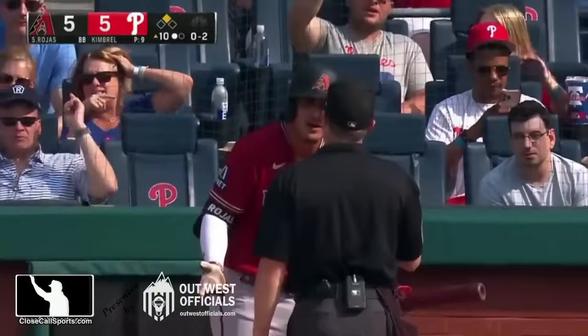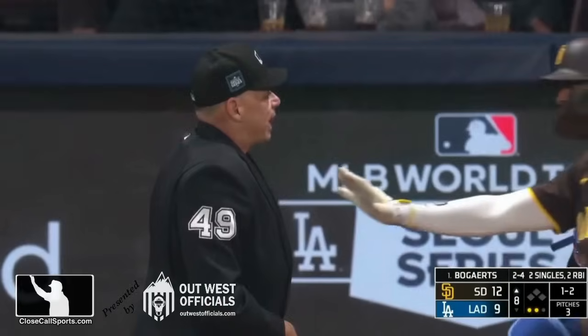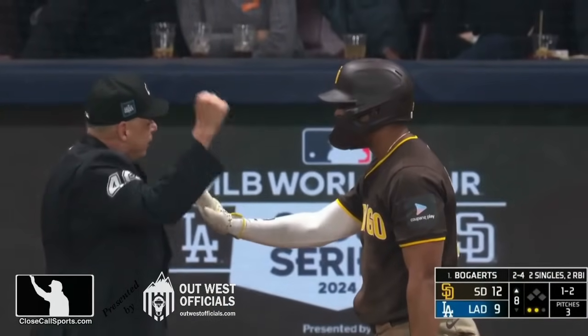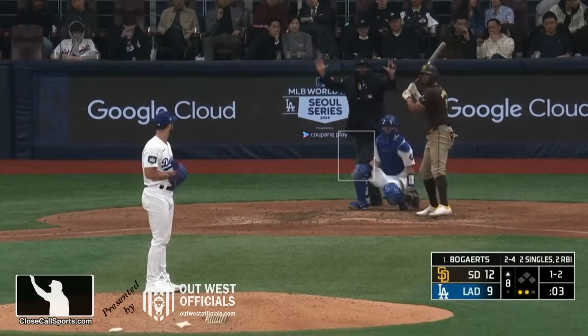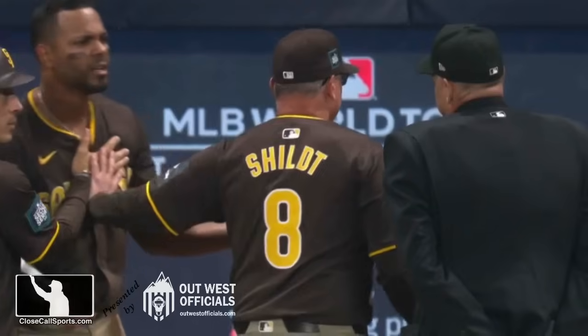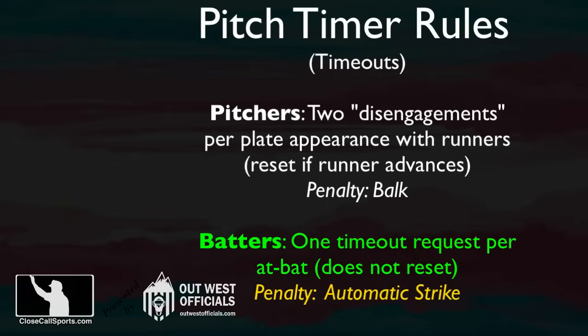Last year I said the pitch clock would lead to more disagreements — and it has. This is an example of a pitch clock adjacent rule: one timeout maximum per batter, that has led to a disagreement. The ump said you did it twice, the batter says you did it once. Everyone's rushed, not much time to figure it out, and that's why this happened. In conclusion, the umpire thought the batter called timeout twice, and the penalty for which is an automatic strike.